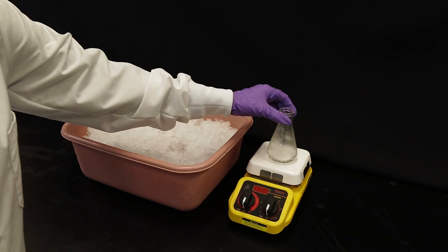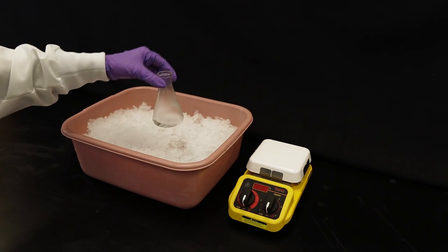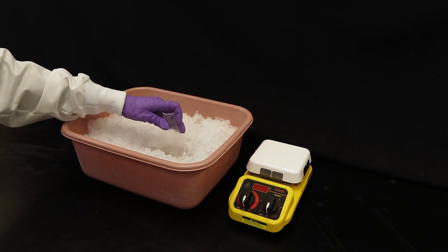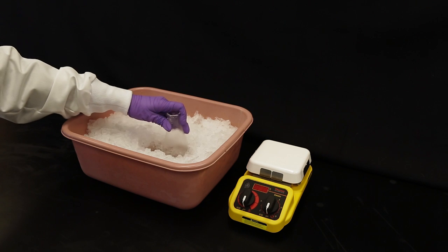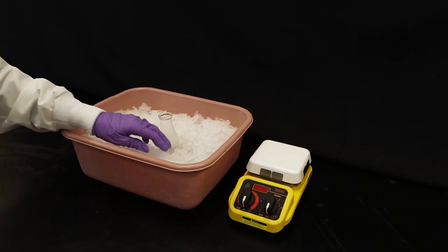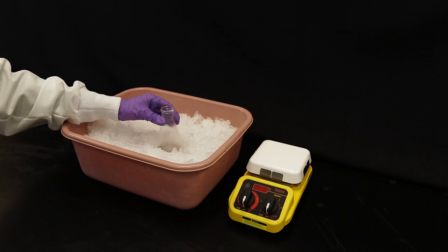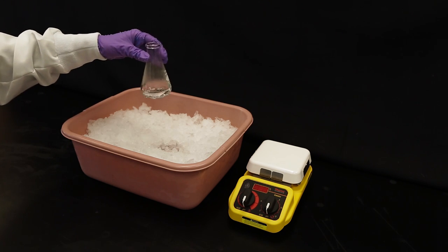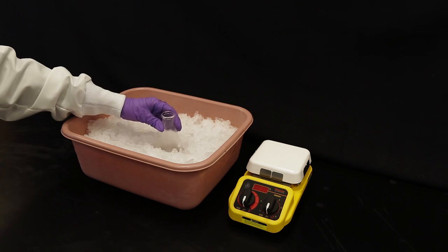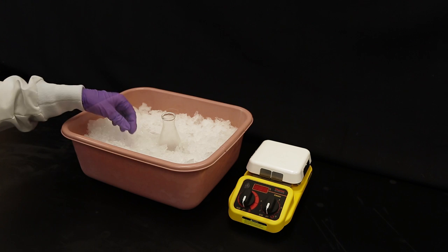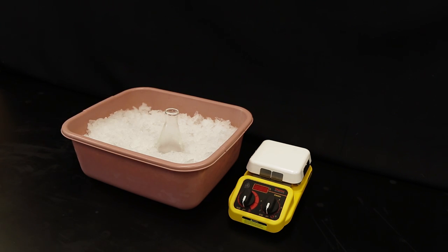After all of the solution has been filtered into the Erlenmeyer flask, transfer the flask to an ice bath. Since the compound was not soluble in the initial volume of room temperature liquid but has been forced into solution by elevated temperatures, the solution is said to be supersaturated. It cannot hold any more compound.